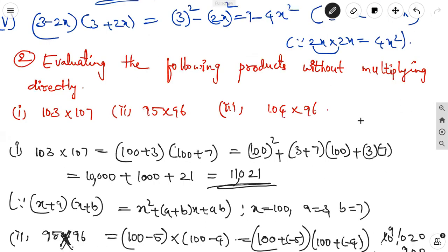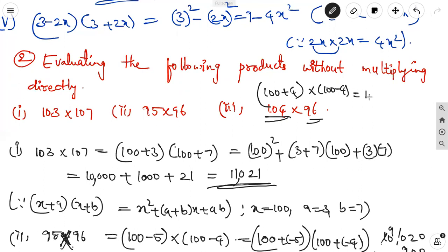The third one, do it for homework: 104 can be written as 100 plus 4 and 96 as 100 minus 4. It is equal to 10,000 minus 16. Simplify accordingly.